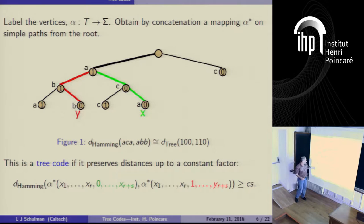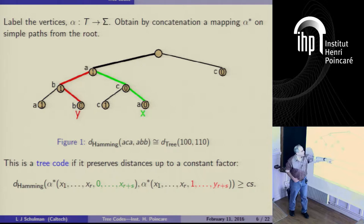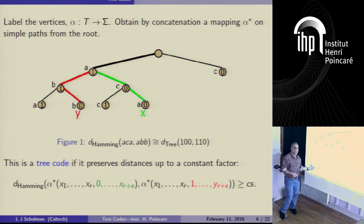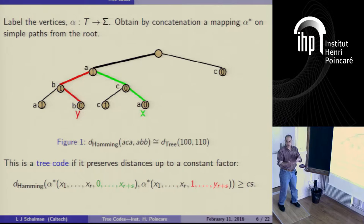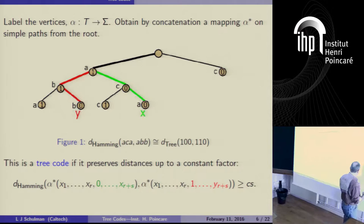Here's the least common ancestor of X and Y. Reading one word going down one branch gives, say, 'BB'; reading the other branch gives 'CA'. Those have a particular Hamming distance — in this case, two. We call this whole labeling a tree code if for every X and Y anywhere in the tree, this mapping preserves distances — it's a constant-distortion mapping from tree distance into Hamming distance. There should be some constant C representing the amount of distortion you're willing to tolerate.